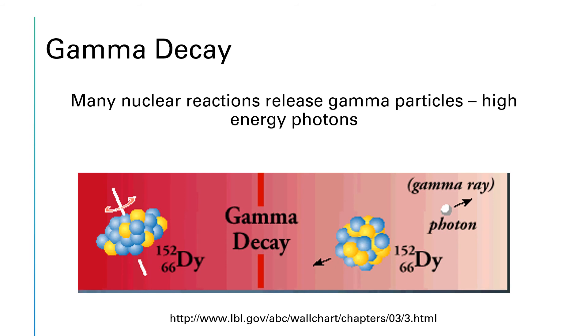Gamma decay occurs when a nucleus moves from one state to another state. It may not necessarily emit any other particles, just a gamma ray or a photon. And additionally, many, many nuclear processes will release gamma particles. A gamma doesn't have to be the only thing that's emitted.